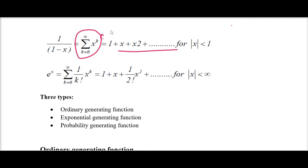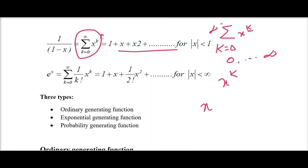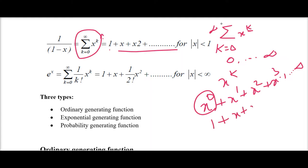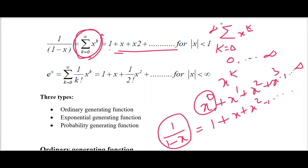Consider x power k in a summation function with lower limit 0 and upper limit infinity — it starts from 0 to infinity. So x power k means the value of k varies from 0 to infinity, which is x power 0 plus x power 1 plus x power 2 plus x power 3, and so on. This simplifies to 1 plus x plus x squared plus x power k and so on. This is the series, and this series can be generalized as the function 1/(1-x). This is the generating function and that is the series.